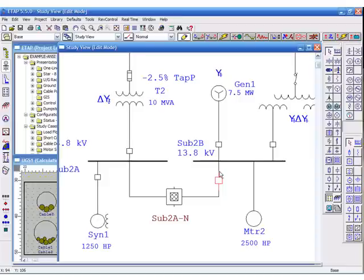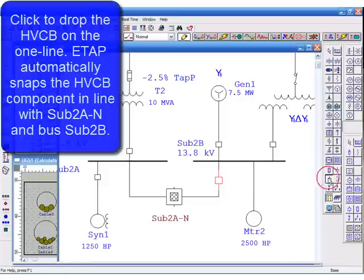The breaker to be inserted does not have to be exactly overlapping the connection. Click to drop the circuit breaker on the one line. ETAP automatically snaps the circuit breaker component in line with the composite network and the bus.